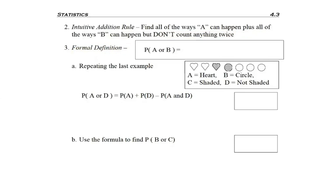And the formal definition, if you want to find the probability of A or B, two events occurring at the same time from a single selection, the formula states you find the probability of A plus the probability of B, but then you subtract off the probability of A and B at the same time.